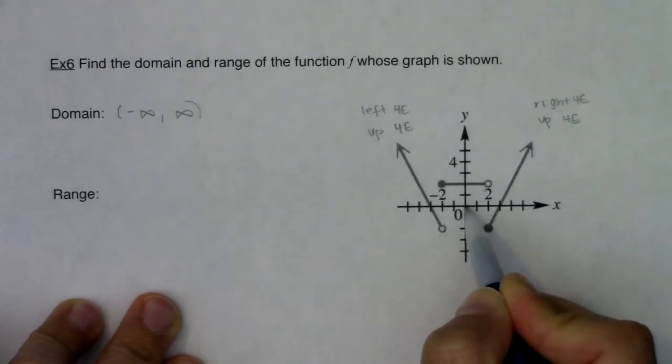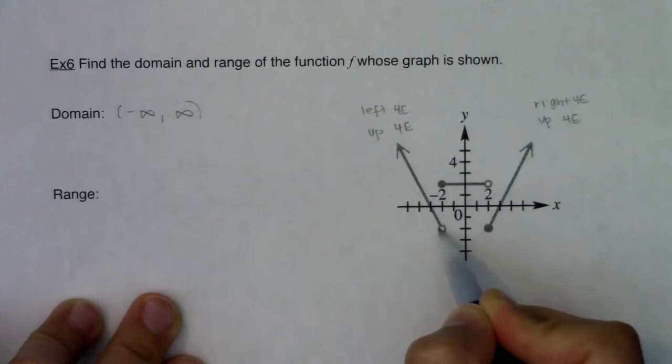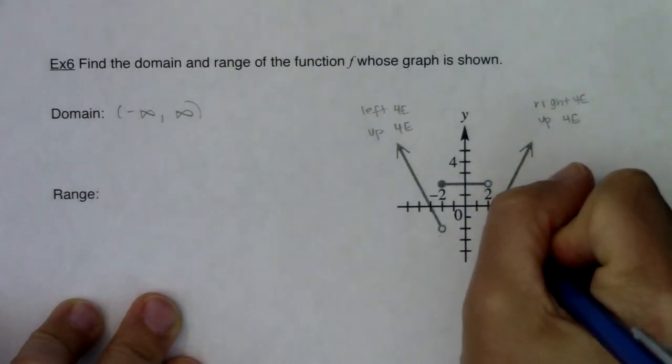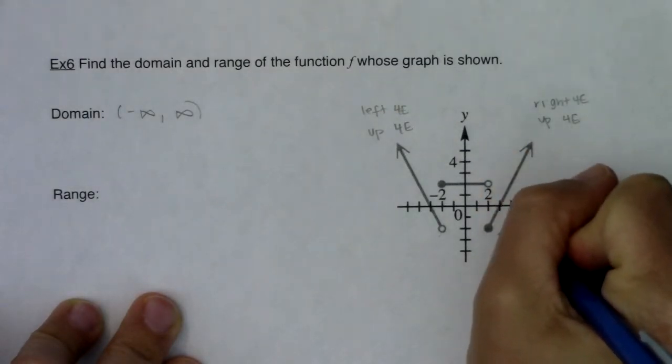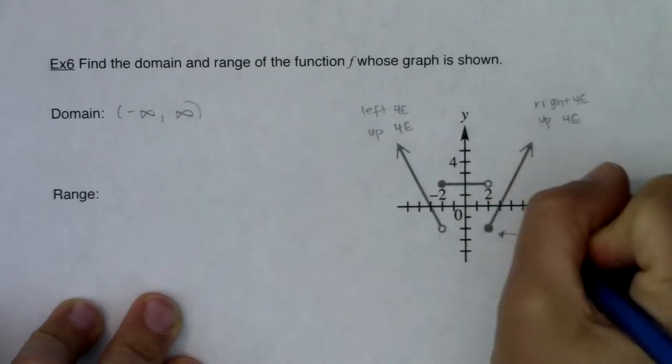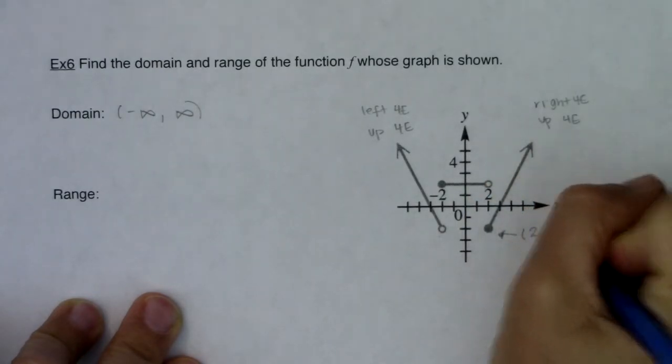It's open here, excuse me, negative 2, negative 2, open here. So I don't actually hit the y value of negative 2 on this leftmost piece, but I do hit it right here. I can see my lowest point. This would be at 2, negative 2. So this is the lowest point at 2, negative 2.